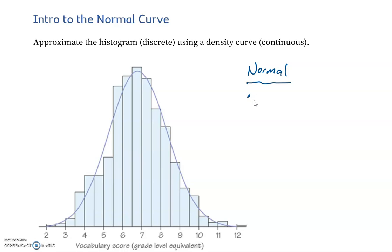So what does it mean? Well, first of all, it has to be symmetric. But that's not enough because there are a number of curves that will be symmetric but not normal. So what else do we need?